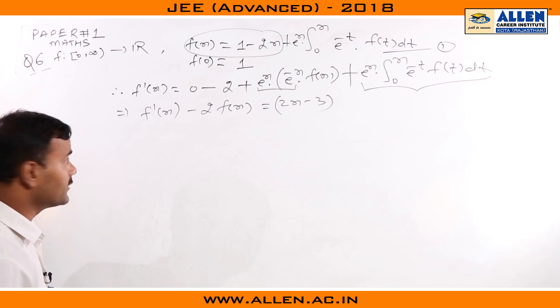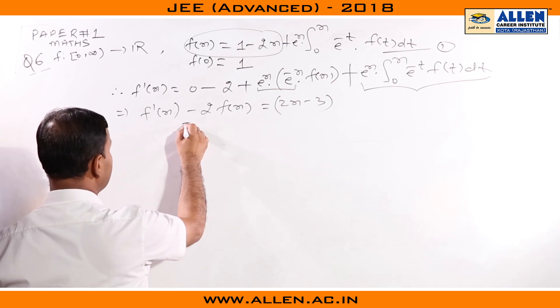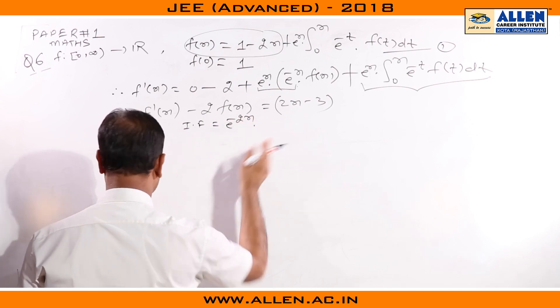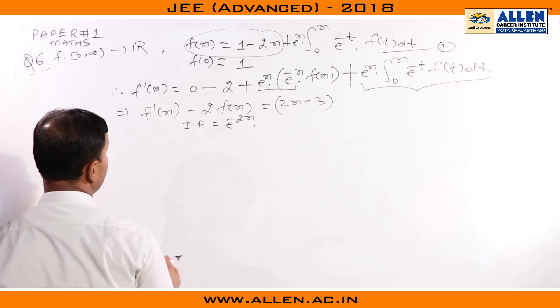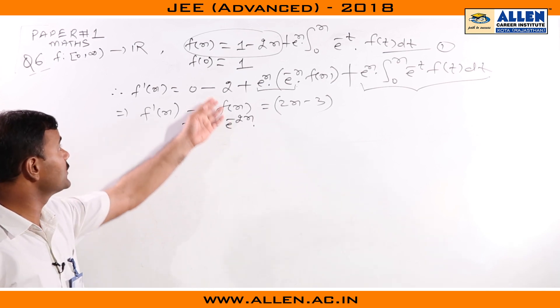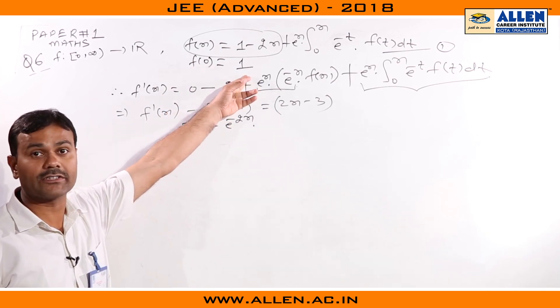We can find the integrating factor, which will be e^(-2x), and we can write the general solution. The constant of integration we can find using the fact that f(0) = 1.